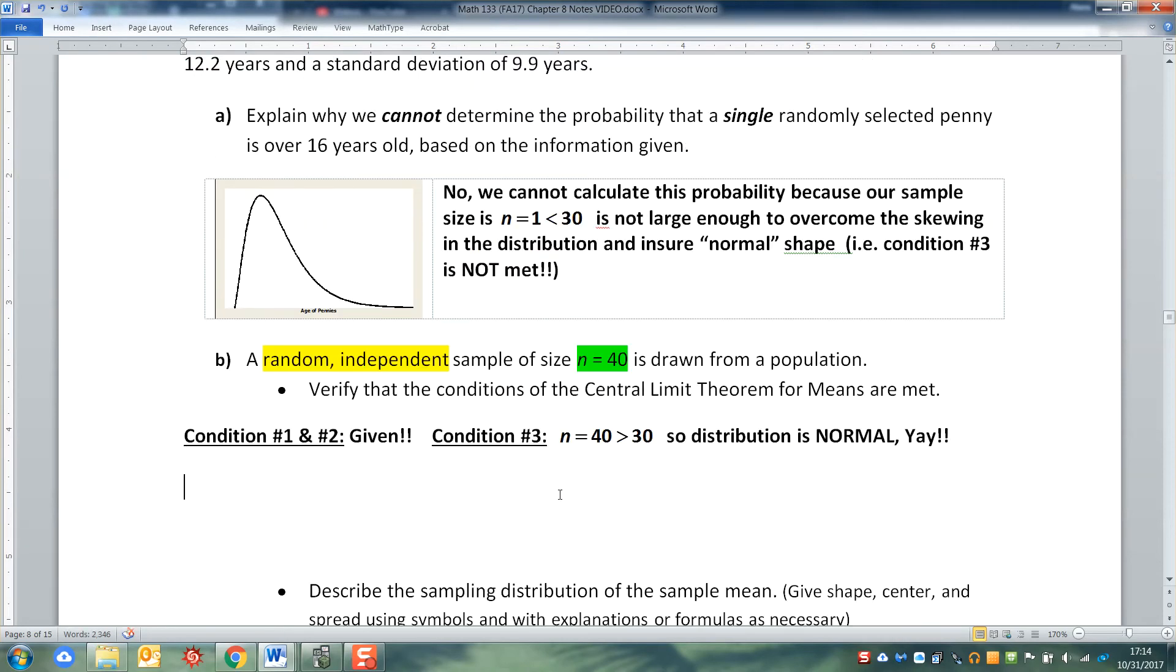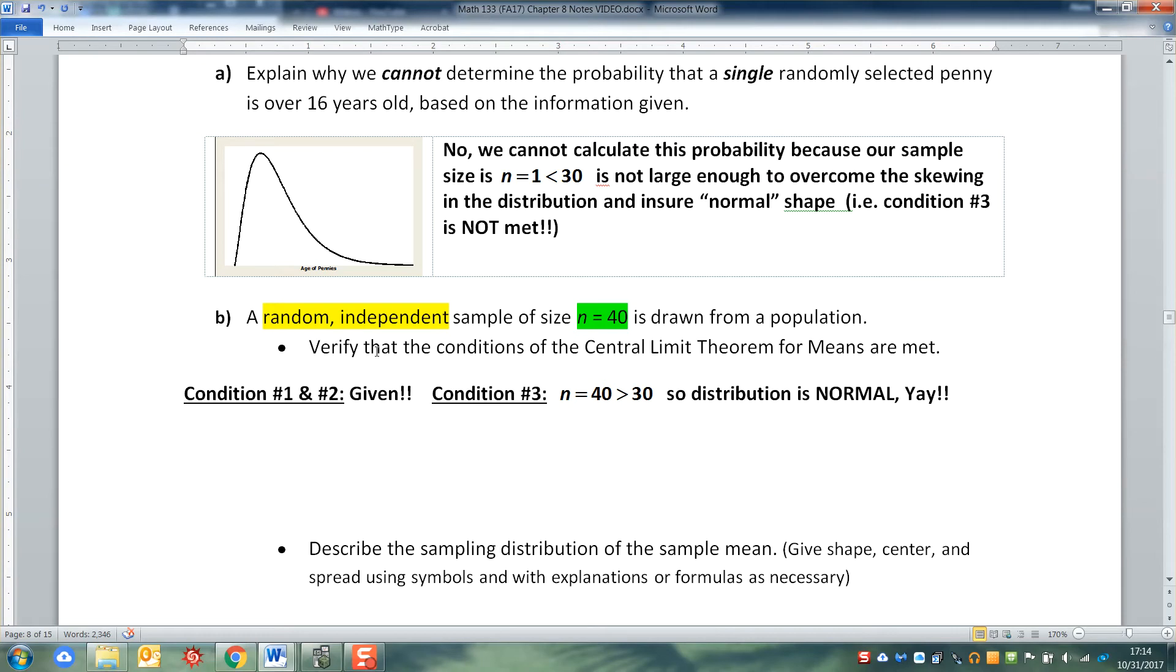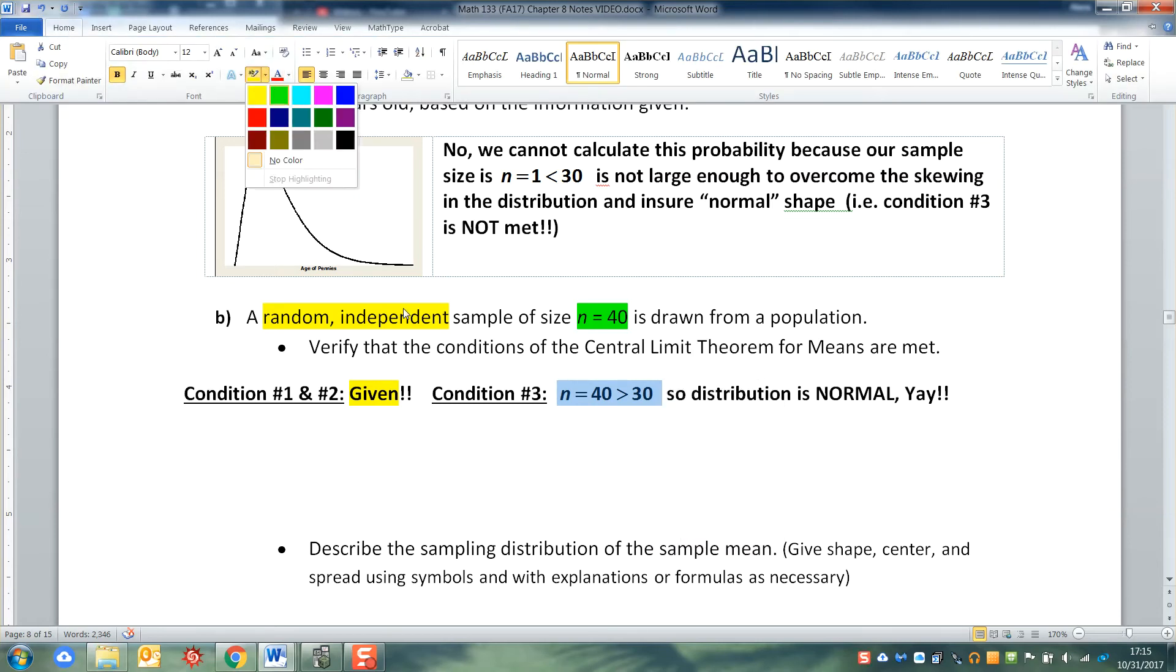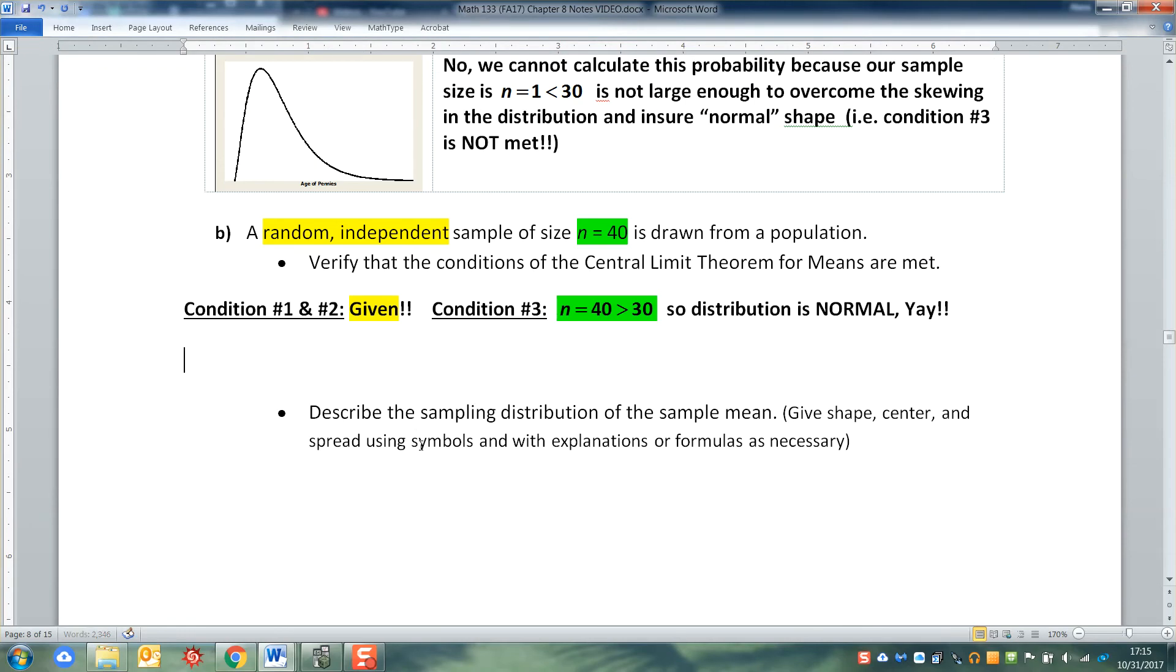So we verified our conditions. We were given 1 and 2, random and independent. And the distribution was normal because n equals 40. So then, how can we describe the sampling distribution? Well, the sampling distribution would be shape, center, and spread. The shape will be normal, we just proved it. Shape is normal, we already proved it up above.